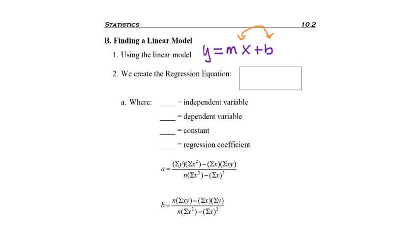Although for statistics, we tend to flip-flop where the mx and the b are, so it's more like y equals b plus mx. And then actually when we list it as our regression equation, we use different variables. So y equals a plus bx is the traditional regression equation, which is just your y equals mx plus b formula flipped around with letters changed.